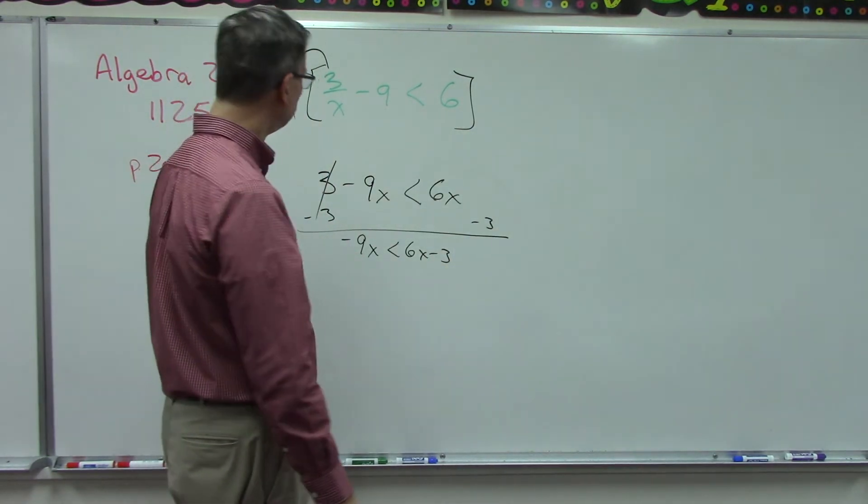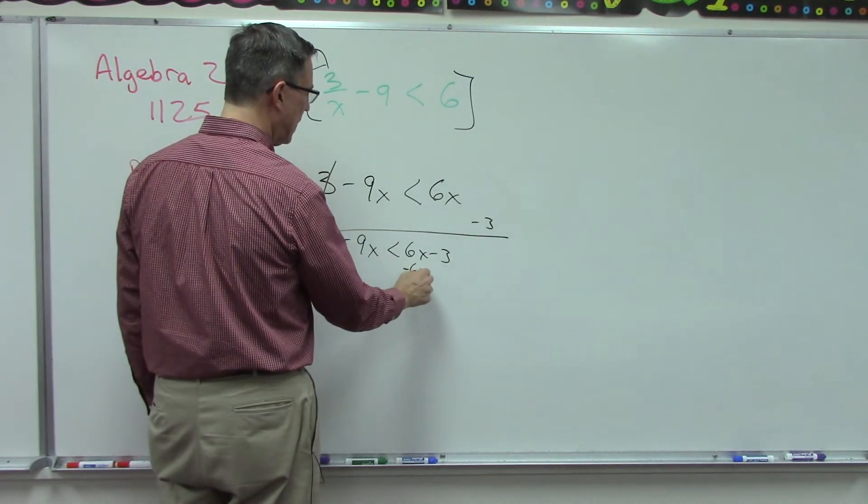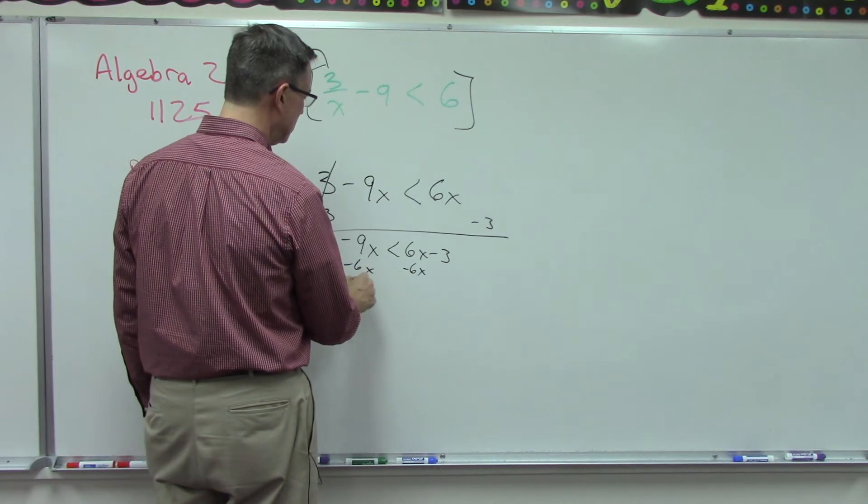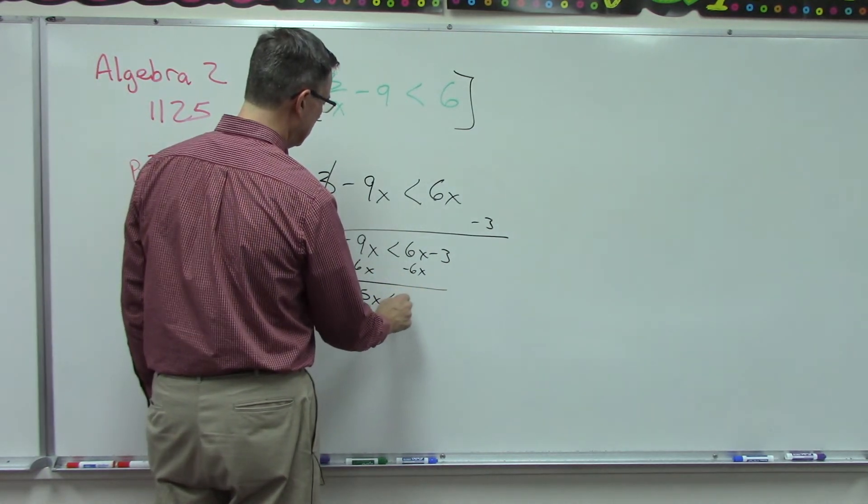Now I want to get rid of the six X and get it over here on this side. So we'll subtract six X on both sides, and now I have negative fifteen X is less than negative three.